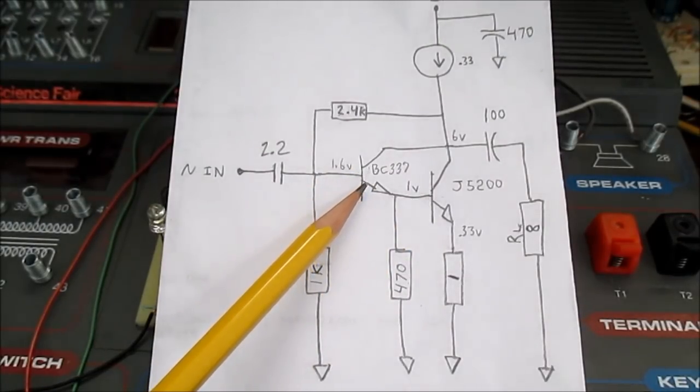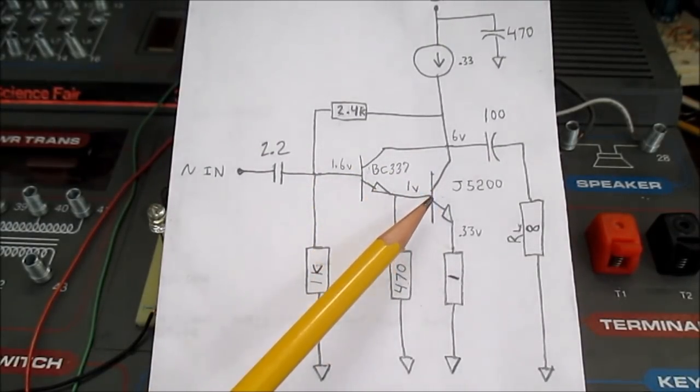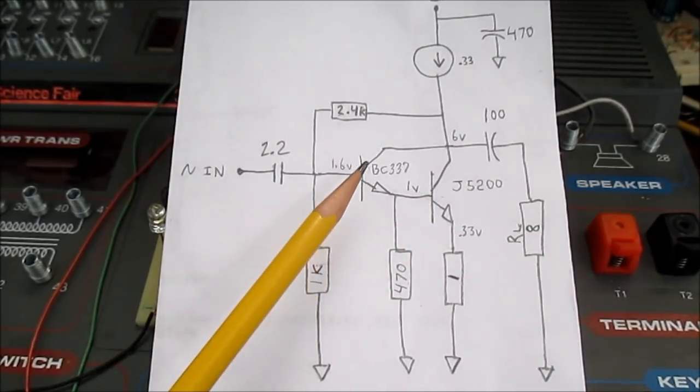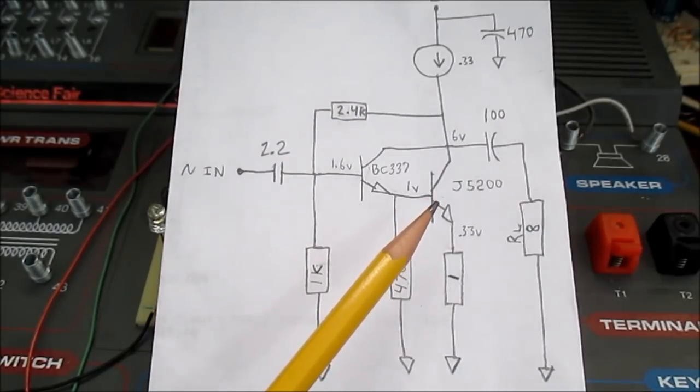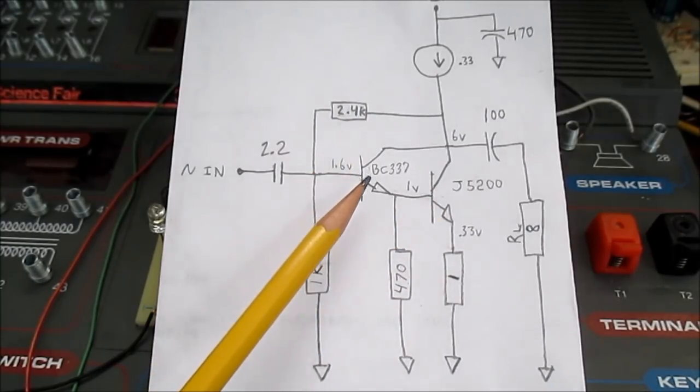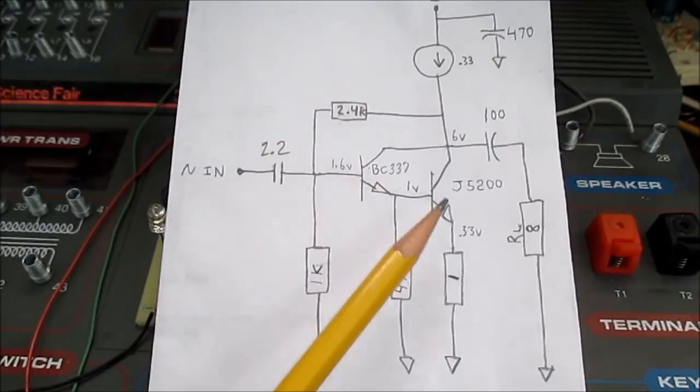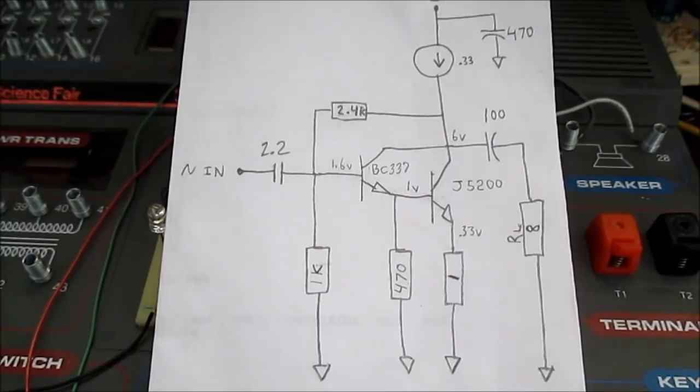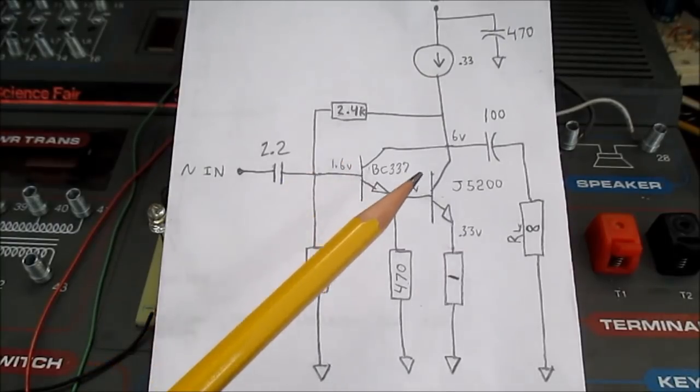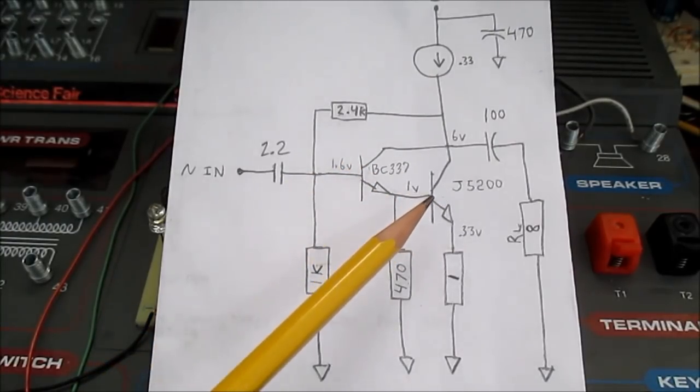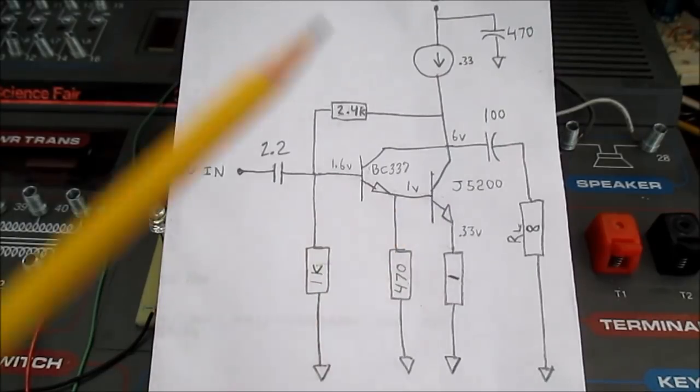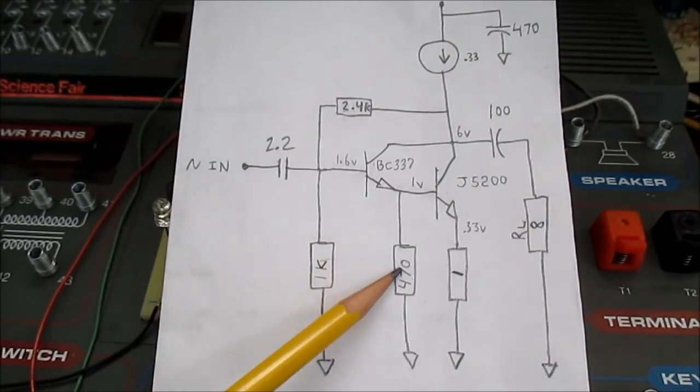So, if this had a gain of 100, and this had a gain of 40, it would be 100 times 40, or 4,000 plus 100 plus 40. So it would be 4,140. However, most people would just say 4,000 because it's close enough. In other words, the gain of this transistor times the gain of this transistor. So, why do we have this resistor here?